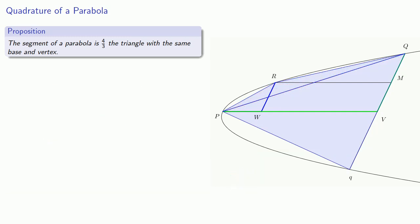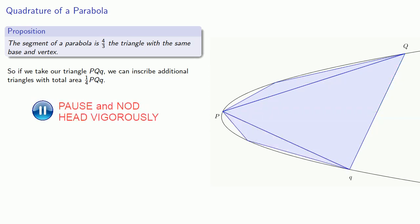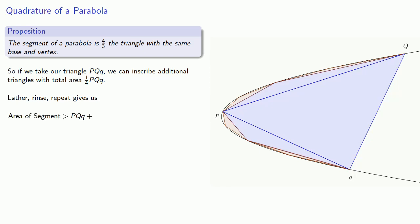Now what this means is that if we take our triangle PQQ, we can inscribe additional triangles with total area 1/4 of this triangle. And these form these little projections here. But now lather, rinse, repeat. And because all of these triangles are going to be inscribed in the segment, then the area of the segment has to be greater than PQQ, plus a quarter of PQQ, plus a sixteenth, and so on. And that's the geometric series that sums to 4/3 the original triangle.